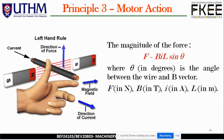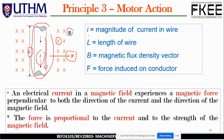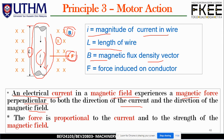Here is the left-hand rule. Back to the diagram: I is the magnitude of current in the wire, L is the length of wire, B is the magnetic flux density vector, and F is the force induced on the conductor. A current-carrying wire in a magnetic field experiences a magnetic force perpendicular to both the direction of the current and the magnetic field. These three elements — B, F, and I — are all perpendicular to each other, separated by 90 degrees.